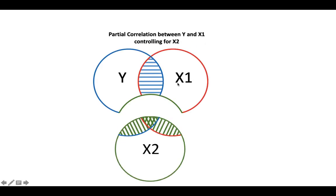We could also look at a regression between x1 and x2 and examine those residuals — in other words, the variation in x1 not accounted for by x2. This y section is effectively the residual from the regression of y with x2, because this is what x2 cannot explain. Similarly, this red area is the residual — what x2 cannot explain with respect to x1 when we regress those two variables. We correlate these two sets of residuals together, and this is called the partial correlation between y and x1, controlling for x2 — above and beyond the influence that x2 has on both y and x1.